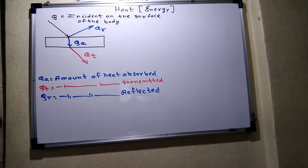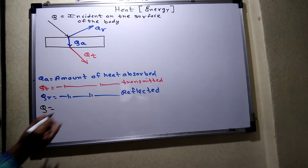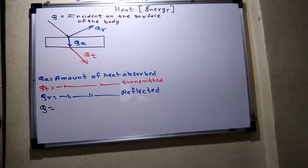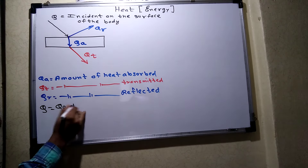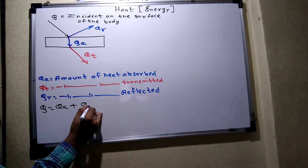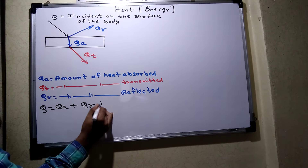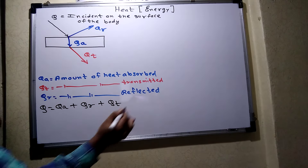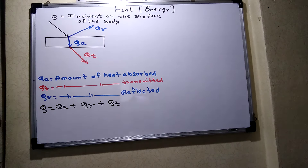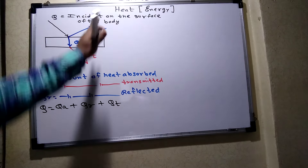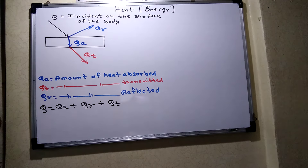Qr is the amount of heat reflected. So we observe that the total heat is divided into three parts: some amount is absorbed, some is reflected, and some is transmitted. Therefore, Q equals Qa plus Qr plus Qt.